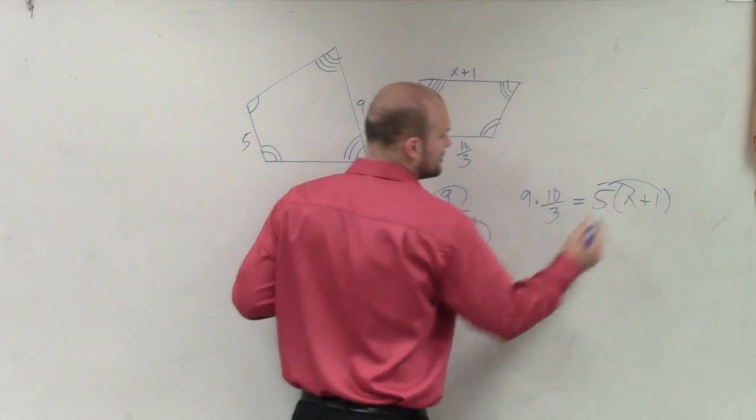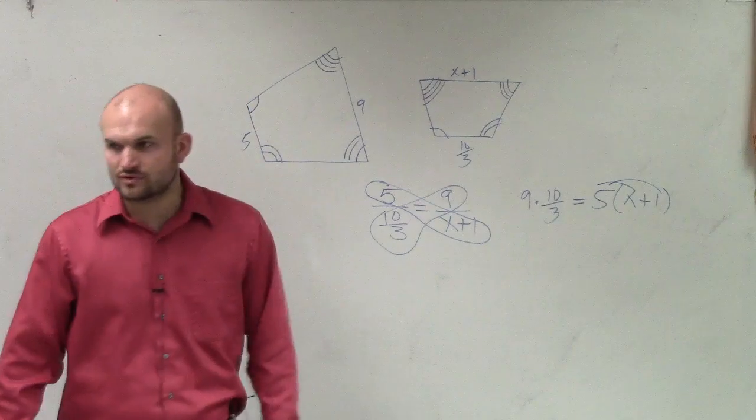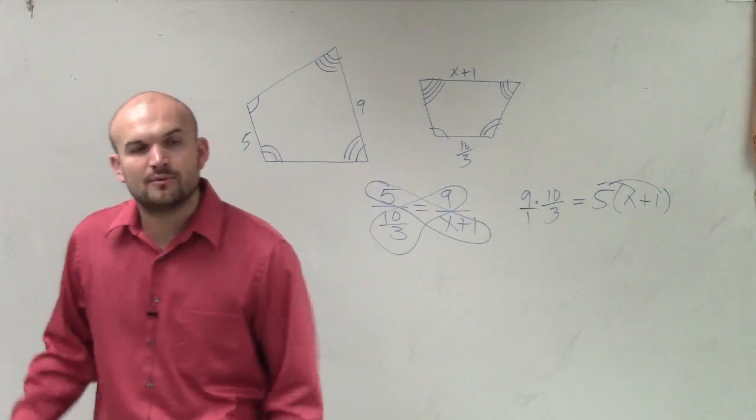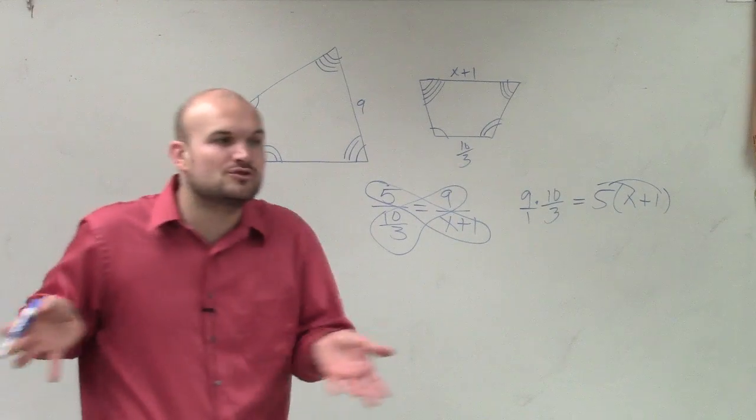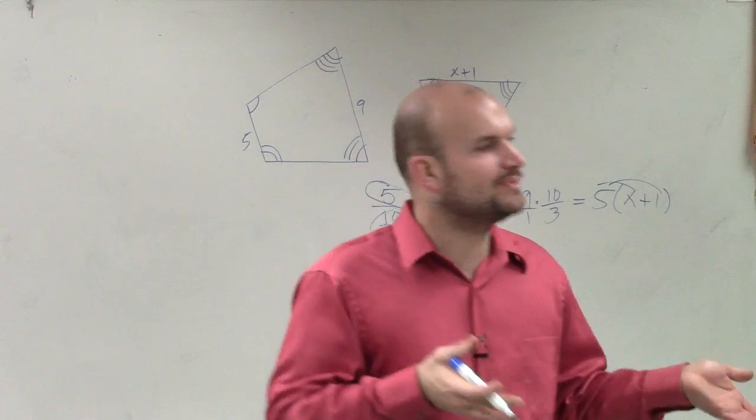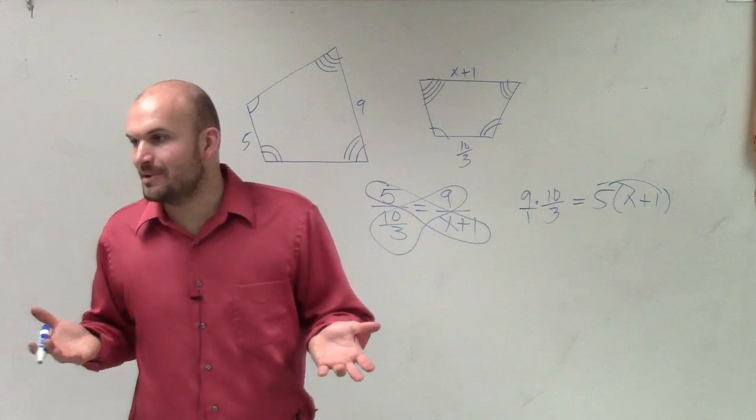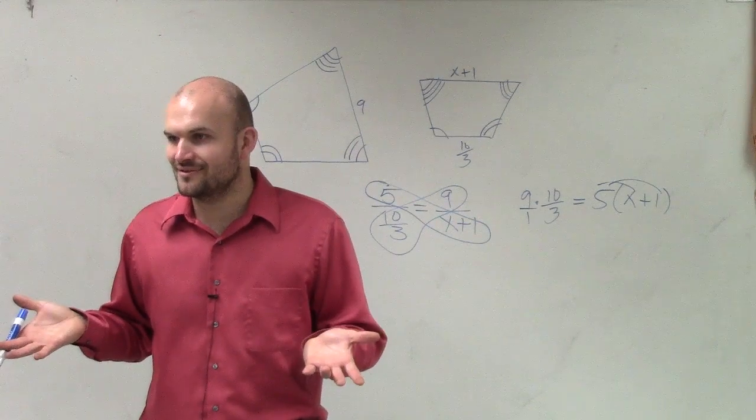So now I distribute, and I say, all right, 9 times 10 over 3. You can write your whole number as a fraction. And when you multiply fractions, you do not use cross multiplication. You just multiply across. So 9 times 10 is 90, divided by 3 is 30.